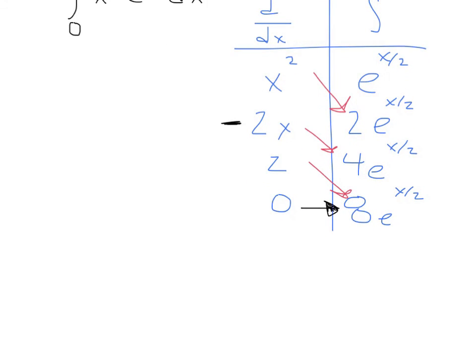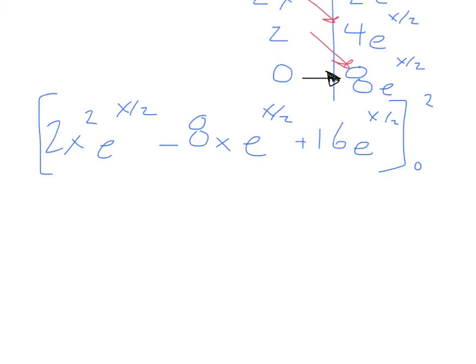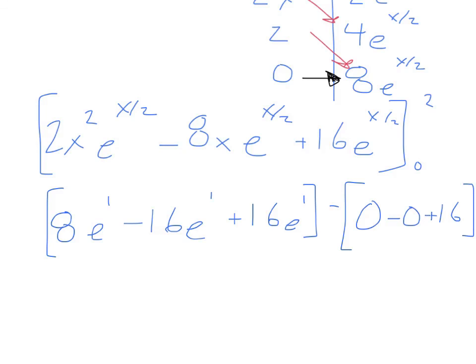So at this point, my integral has become 2x² e to the x over 2 minus 8x e to the x over 2 plus 16 e to the x over 2. And this entire thing is being evaluated from 0 up to 2. So now all I have to do is the evaluation. We plug in 2 and we get 8e to the first power minus 16e to the first power plus 16e to the first power. That's that one. Minus, now we plug in 0: 0 minus 0 plus 16. So let's see here. These things eliminate. And it looks like all I have, this is a really nice answer, 8e minus 16.